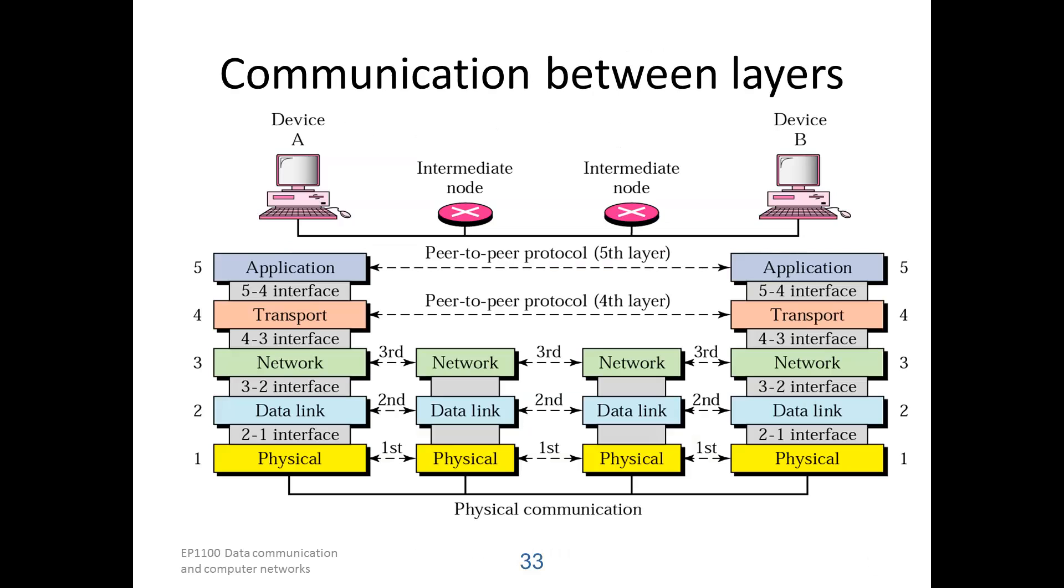Here we show the different protocols that are implemented in the different nodes of a network. We see that the intermediate network nodes only have the lower three layers, because they only provide the network service. They don't provide any higher service than that.